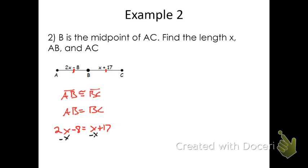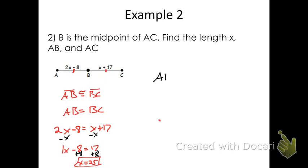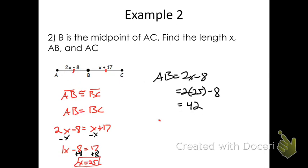If I just solve my algebraic equation here, I can subtract X from each side and then add 8 to each side. We get that X is 25. We've got to be careful and always answer the question — they said find X, but they also said find AB and AC. So if I take my 25 and substitute into AB: AB equals 2X minus 8, that's 2 times 25 minus 8. So 50 minus 8 is 42. That's the length of AB — it's 42.